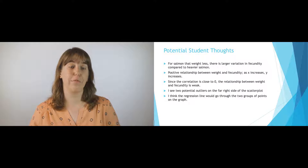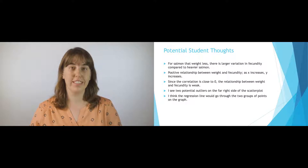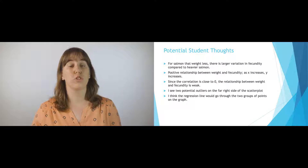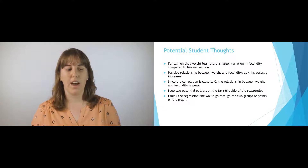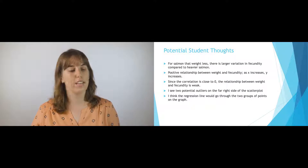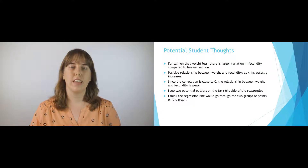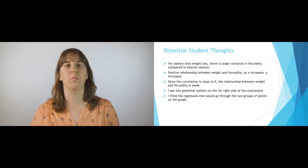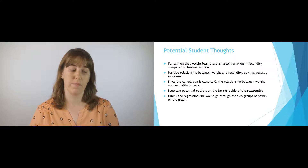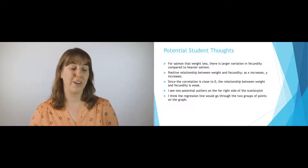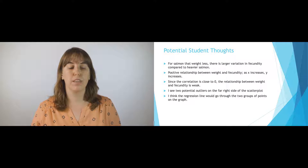Potential student responses after pondering those questions: students would probably note that salmon that weigh less have a larger variation or spread in fecundity compared to heavier salmon. Students might also comment on the positive relationship between weight and fecundity — that as X increases, Y increases. Since the correlation is close to zero, they'd recognize there's probably a weak relationship. They might also note the two potential outliers, and hopefully draw the regression line through the two groups of points, perhaps slightly higher or lower.